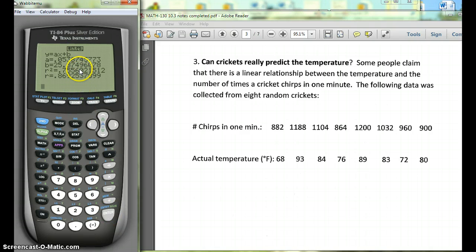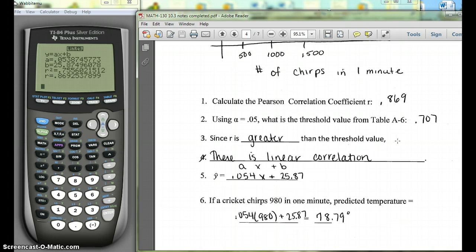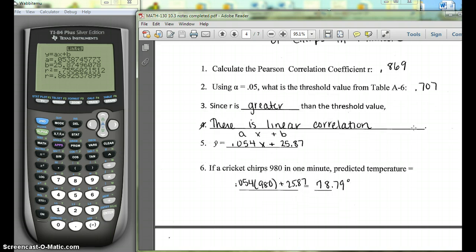Remember if you're missing the R value to check if there is linear correlation, you'll need to do diagnostic on, which I explained in a previous video. So if we go through the problem, our correlation coefficient here we can see is 0.869. The threshold value we got from the chart was 0.707. This is all from the previous section. Since it is greater, there is linear correlation.